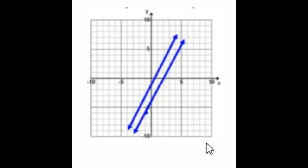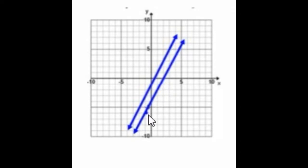Graphically, our answer makes sense. Here is the original line and our parallel line y equals 2x minus 4. You can see that it goes through the point negative 1, negative 6.